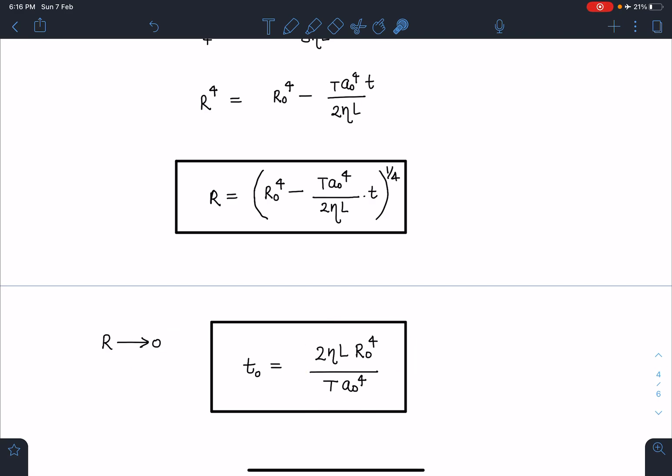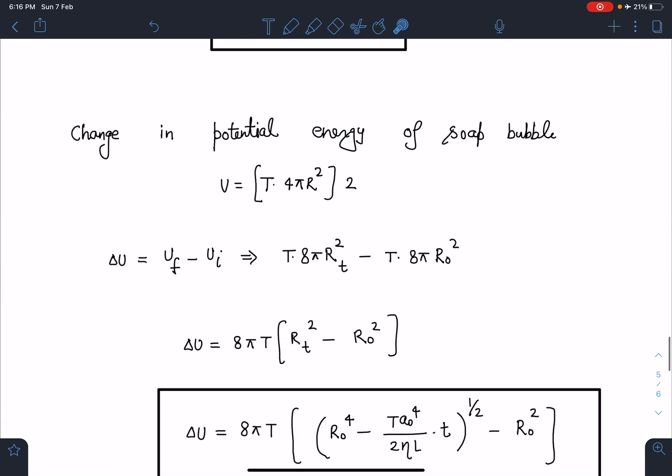When R becomes zero I'm going to get this t₀ as 2ηLR₀⁴/Ta₀⁴. That's going to be the answer for lifetime of the soap bubble.